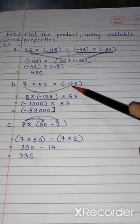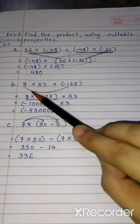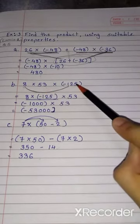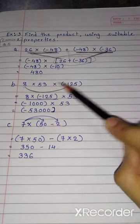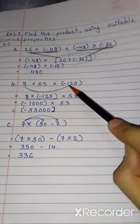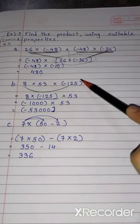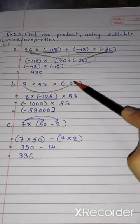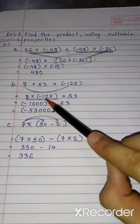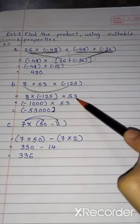Here I am choosing 8 and minus 125 because we will get answer in the multiple of 10. After multiplying these two numbers, we will get answer in the multiple of 10. 8 into minus 125 into 53.